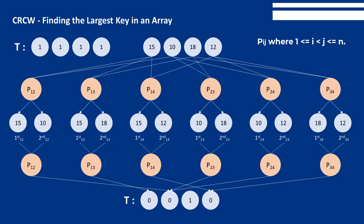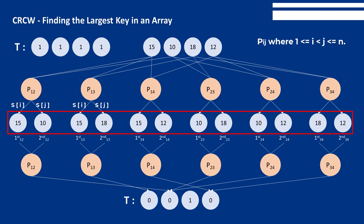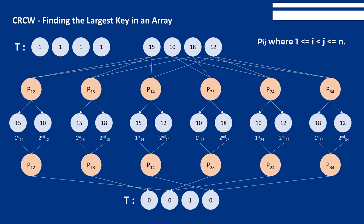Each processor writes a 0 into T[i] if S[i] loses the comparison, and a 0 into T[j] if S[j] loses. Only the largest key never loses a comparison. Therefore, the only element of T that remains equal to 1 is the one indexed by k such that S[k] contains the largest key. The algorithm returns the value of S[k] such that T[k] equals 1. This figure illustrates these steps, and the algorithm follows.